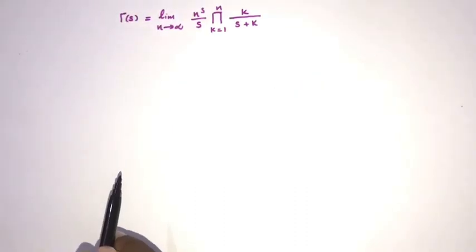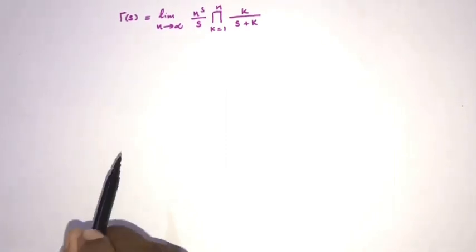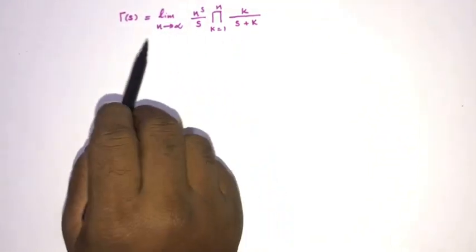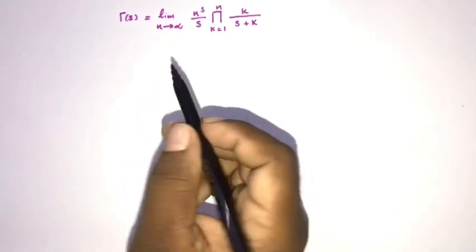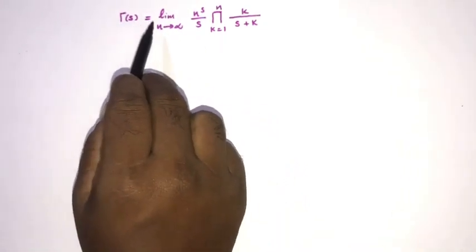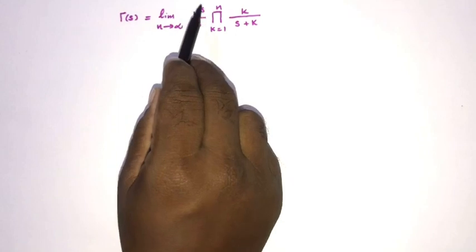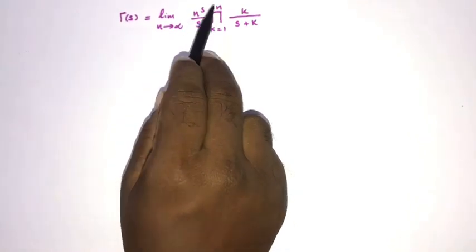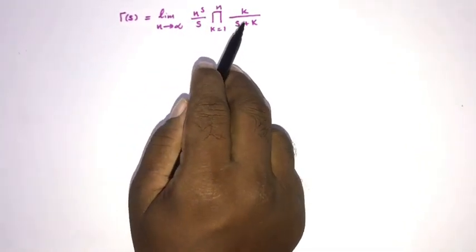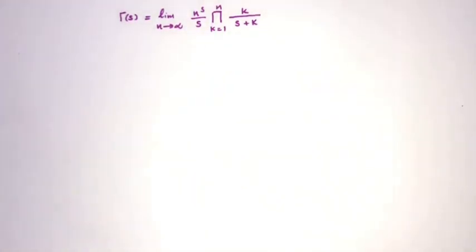Hello everyone, welcome to Mathematics and my channel. In this video we are going to prove the Gauss representation of the gamma function using two methods. Here gamma of s is equal to the limit as n approaches infinity of n^s over s, times the product from k equals 1 to n of k over s plus k.